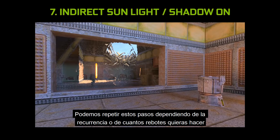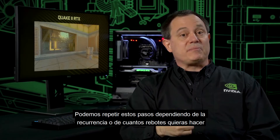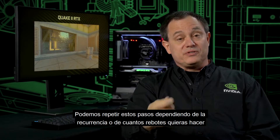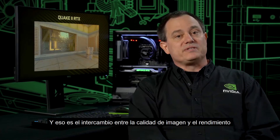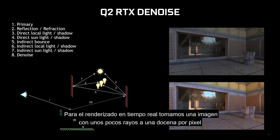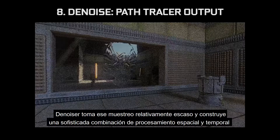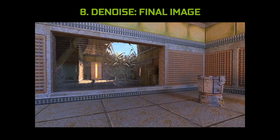We can actually repeat a number of these steps indefinitely, depending on how much recursion or how many bounces you want to do — that's a trade-off between image quality and performance. The final step is denoising. For real-time rendering, we'll typically shoot a few to a few dozen rays per pixel. Denoisers take that relatively sparse sampling and construct the final picture through a sophisticated combination of spatial and temporal processing.